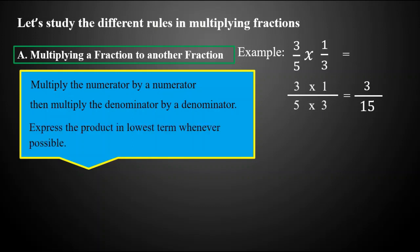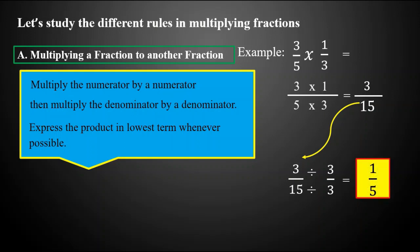Five times three is equal to fifteen. Lastly, we are going to express the product in the lowest term whenever possible. Our product is three over fifteen, and they have a common factor of three, so we simplify by dividing both the numerator and denominator by three. Three divided by three equals one, and fifteen divided by three equals five. So our final answer is one-fifth. Therefore, three-fifths times one-third equals one-fifth.